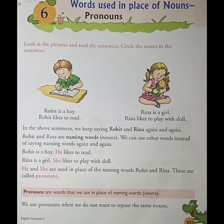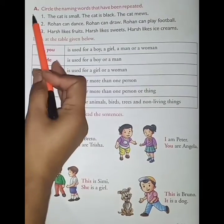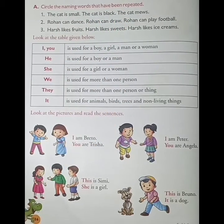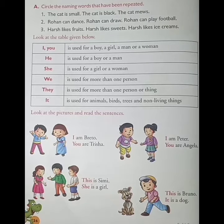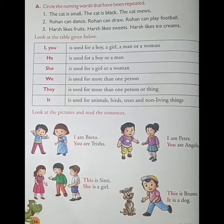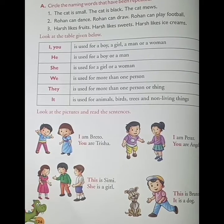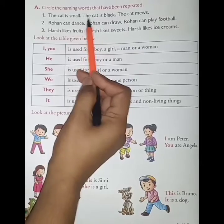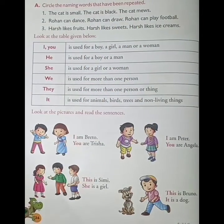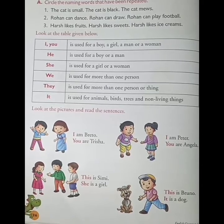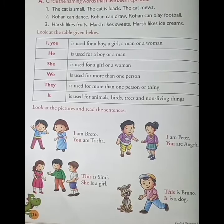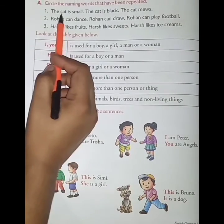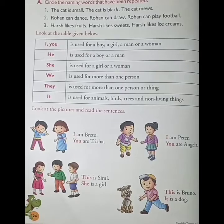See Exercise A: Circle the naming words that have been repeated. Some sentences are given and you have to circle the naming words that have been repeated. See the first one: 'The cat is small. The cat is black. The cat is muse.' In this sentence, the naming word 'cat' is repeated. So you have to circle it. Do it like this for all sentences.